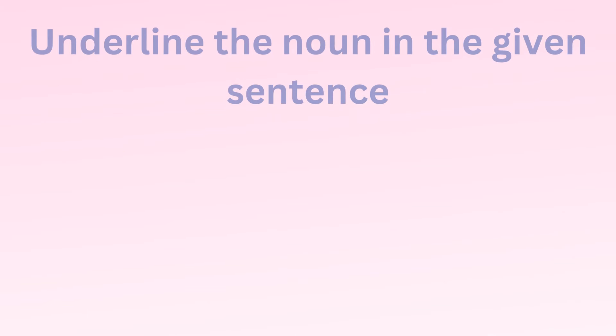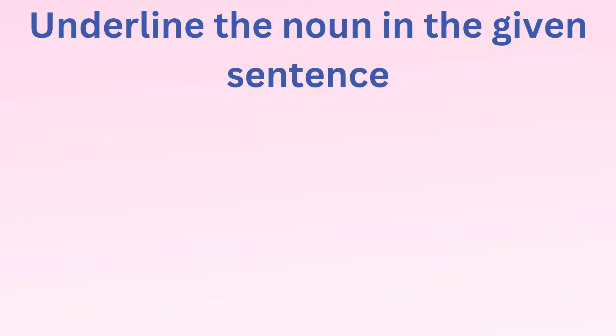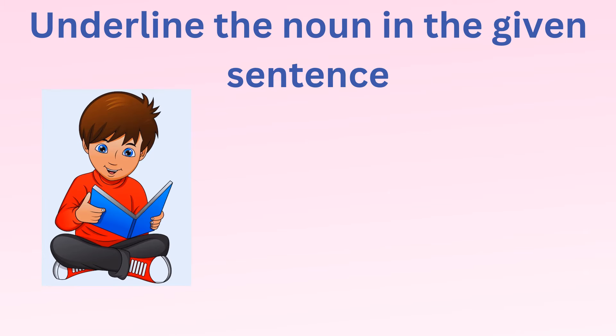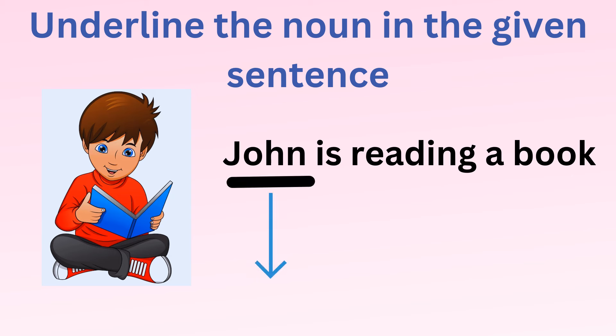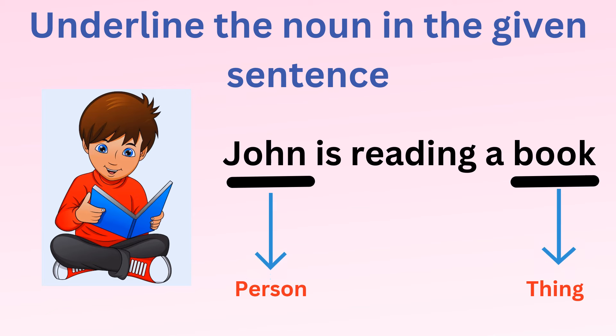Let's underline the noun in the given sentence. John is reading a book. Here, John is a person, and book is a thing.